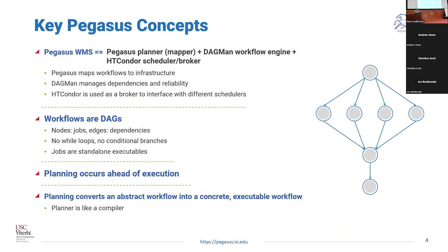Pegasus largely consists of three parts which get deployed on the access point. You have the Pegasus planner, which converts the workflow you describe into a DAGMan workflow. Once the workflows are compiled to a DAGMan workflow, we use HTCondor DAGMan to submit the workflow and release the tasks in order. At the bottom layer we have the schedd and the broker — DAGMan releases jobs to the HTCondor schedd, and from there we submit jobs to a local Condor pool or different clusters.